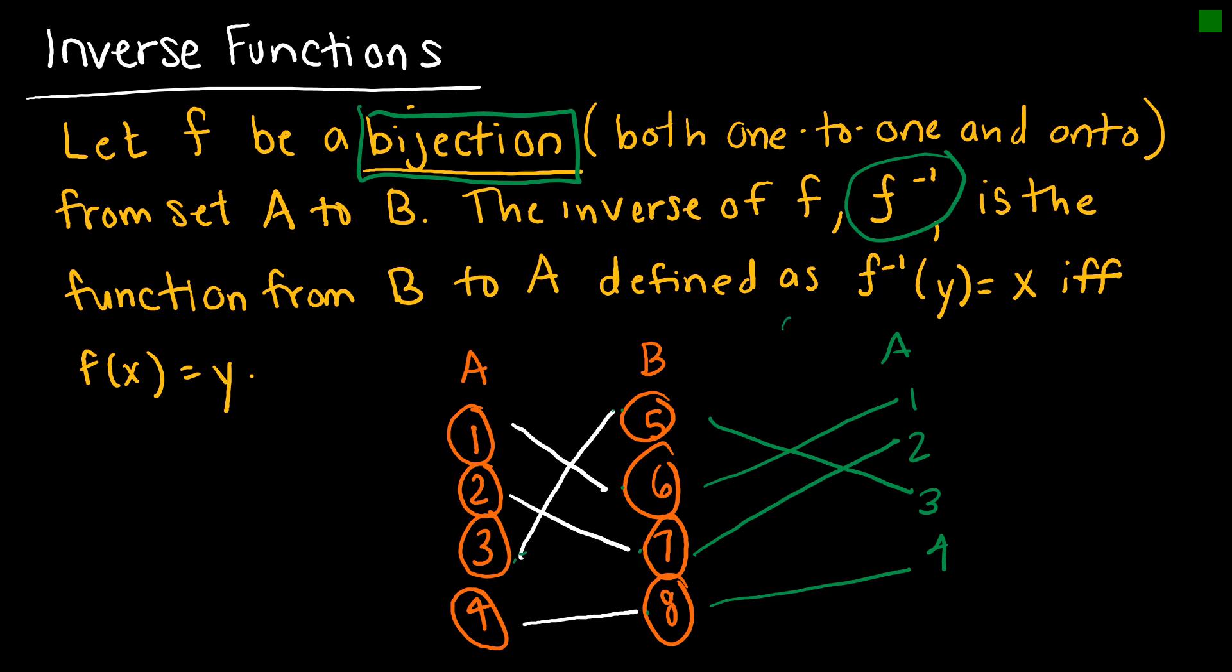So this function would be considered the inverse function as it maps those elements of B back to the elements of A. And so again, we write that the inverse function would map Y to X if and only if the function mapped X to Y. So it's essentially undoing it. It's the inverse.